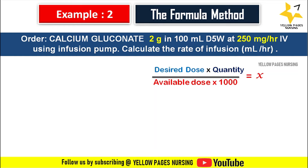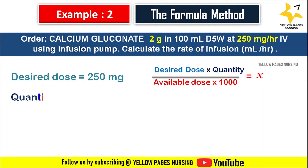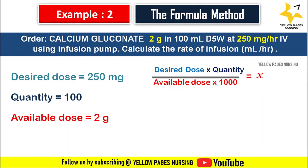The difference between the previous example and this example is we have multiplied the denominator by 1000. This is because in the previous example both the available dose and desired dose were in milligram, but in this case the available dose is in gram, which we have to convert to milligram. So we multiply the denominator by 1000. Desired dose is 250, quantity is 100, and available dose is 2 gram (2000 mg). Applying in the formula: 250 multiplied by 100 divided by 2 multiplied by 1000, which gives 12.5 ml per hour. We set 12.5 ml per hour in the infusion pump.